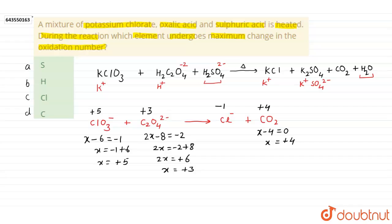Now we can find easily which element undergoes maximum change in the oxidation state. Here we can see plus 5 to minus 1, oxidation number decreases by 6 in this case.